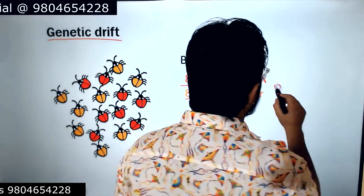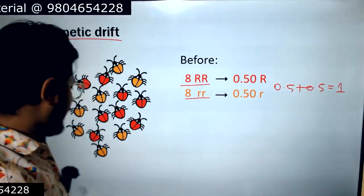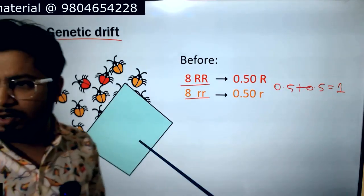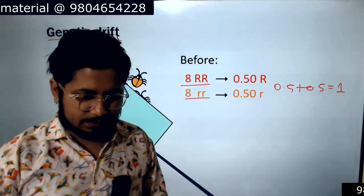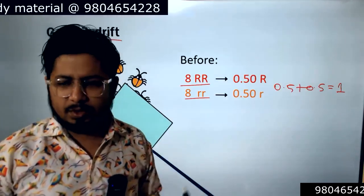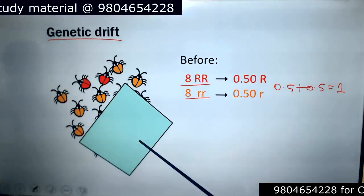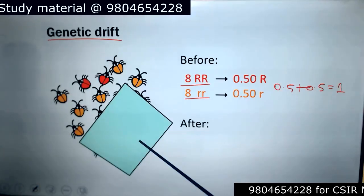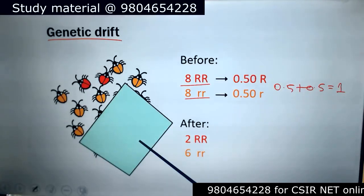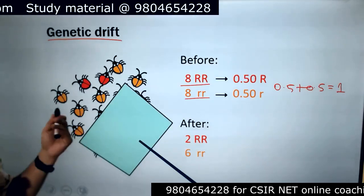At this point, the frequency of P and Q is 0.5 and 0.5, totaling 1. Now after some time, let's say there is a random event. This beetle population is very small — only 16 beetles. They are walking in a path and some of the beetles are killed. More red beetles died. After the event, the red population became 2, and 6 yellow survived, so total 8 survived — 50% of the population died.